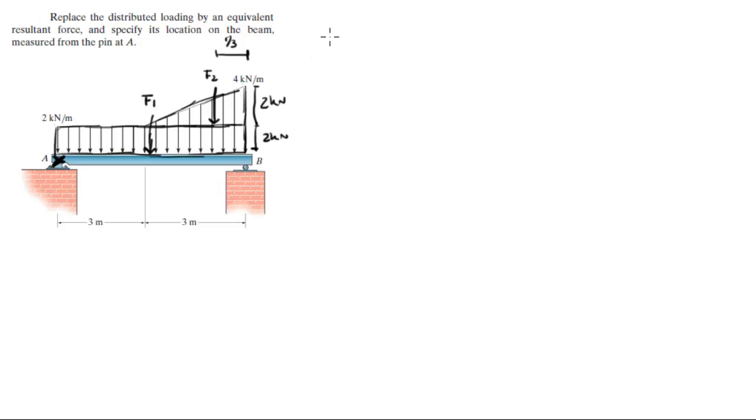So now all you need to do is find areas in order to find forces. F1 is given by the area of the rectangle which is 2 kilonewtons per meter times the length of the rectangle which has a length of 6, and it comes out to be 12 kilonewtons.